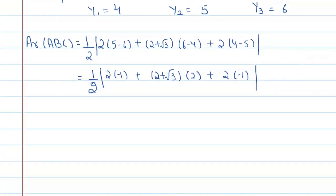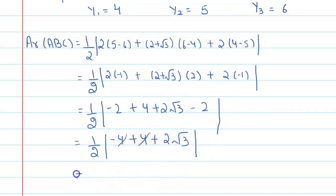This is 1 upon 2 modulus of minus 2. This will become 4 plus 2 root 3 and minus 2. Again, this will become 1 upon 2, minus 2 minus 2 is minus 4. So plus 4 plus 2 root 3. This and this will get cancelled. So you will get 1 upon 2 and 2 root 3.